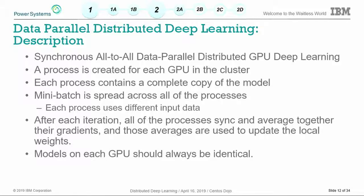Specifically, what I'll be talking about is synchronous — meaning each learner is at the same stage in training, as opposed to asynchronous where they go out and do their own thing and sync back up at certain points. And all-to-all, meaning there's no server — every node communicates with every other node, no parameter server. This is data parallel distributed GPU deep learning.